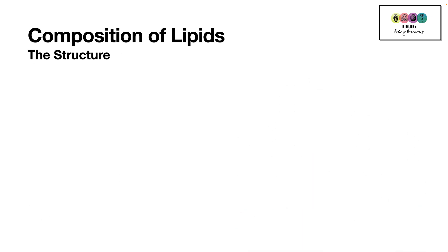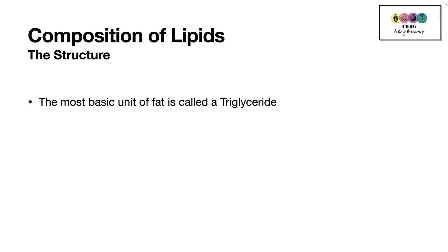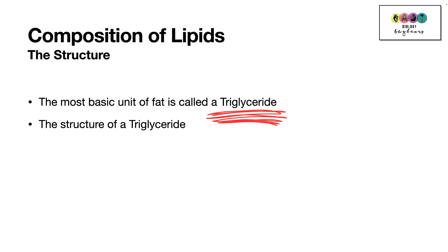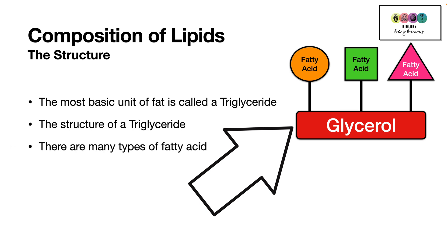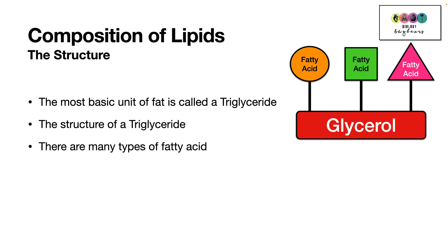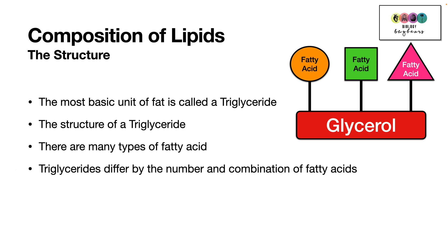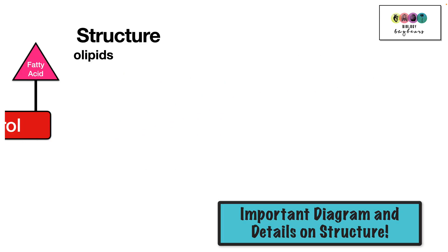We have to look at the composition and structure of lipids. The most basic unit of a fat is called a triglyceride, and its structure is very important. It consists of a glycerol molecule with three fatty acids bonded to it. There are lots of different types of fatty acids, and one triglyceride will differ from another based on the number and combination of those fatty acids.